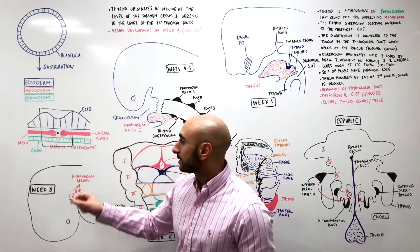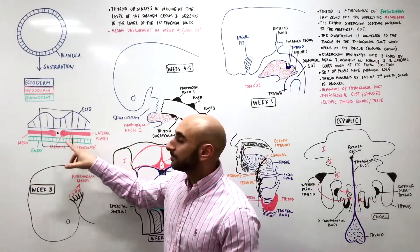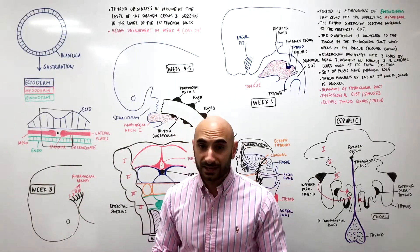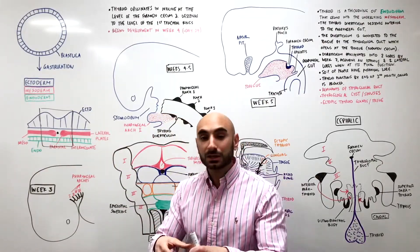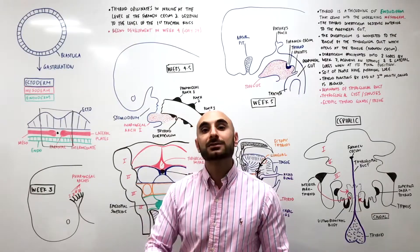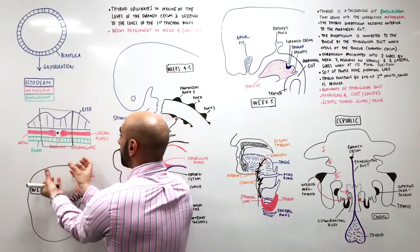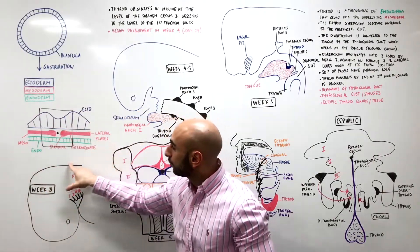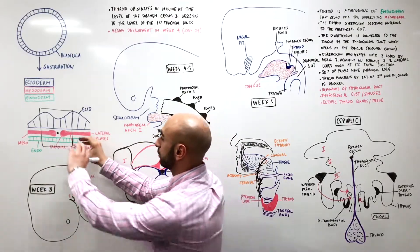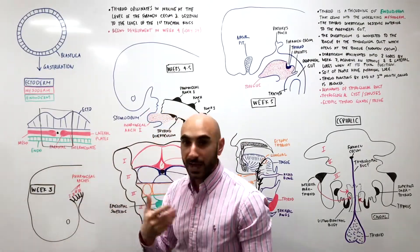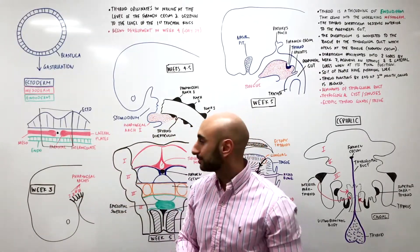The ectoderm will become skin and nervous tissue. The mesoderm is made out of three components: the paraxial mesoderm, which becomes somites and muscles; the intermediate mesoderm, which becomes gonads and kidneys; and the lateral plates. The endoderm is essentially your gut — your gastrointestinal tube. Eventually this will fold, the ectoderm will surround everything else and become skin, the endoderm will become a tube like your gastrointestinal tract, and the mesoderm will be mostly your organs.